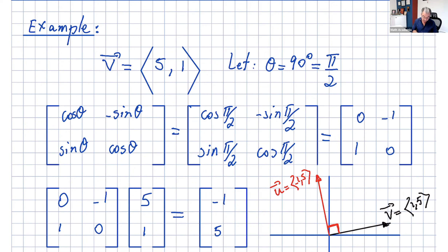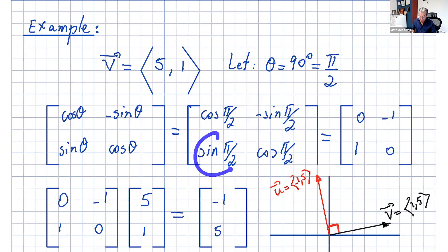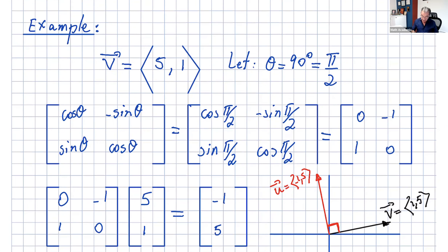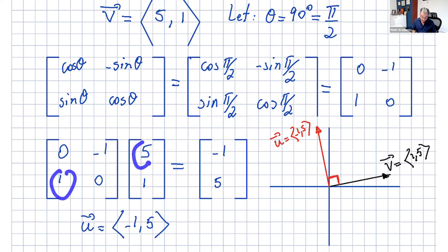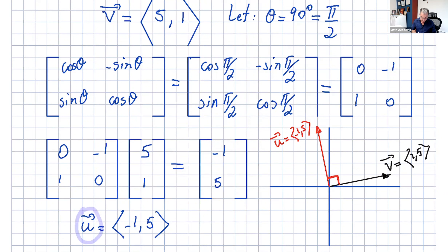We write the rotation matrix for theta = pi/2: cosine(pi/2) is 0, negative sine(pi/2) is negative 1, sine(pi/2) is 1, and cosine(pi/2) is 0. Multiplying that matrix by the vector (5, 1): the first row gives 0×5 + (−1)×1 = −1, and the second row gives 1×5 + 0×1 = 5. So our new vector u is (−1, 5) — wait, negative five and one. That is the rotated vector.